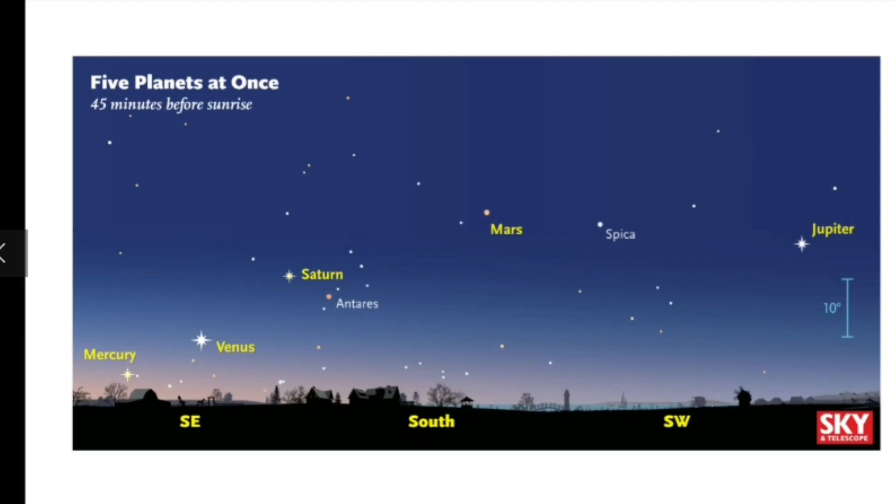Before we had telescopes and satellites, how did ancient people observe celestial objects? There are actually five planets that are very visible from Earth: Mercury, Venus, Saturn, Mars, and Jupiter. You can usually see them in the night sky, very late at night when it's super dark, or before sunrise, early dawn, or after sunset.